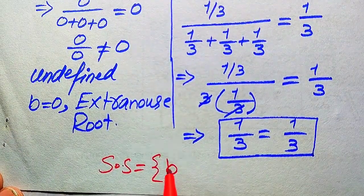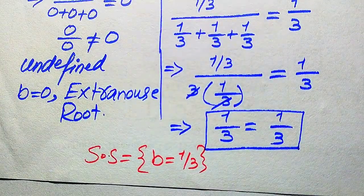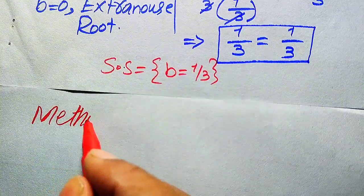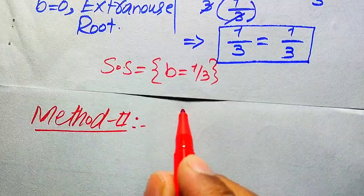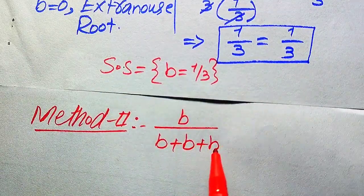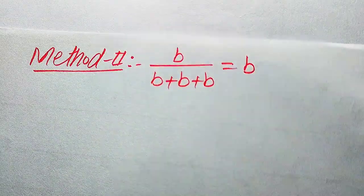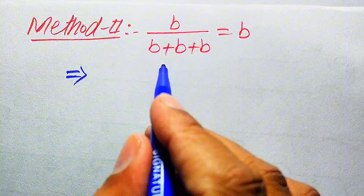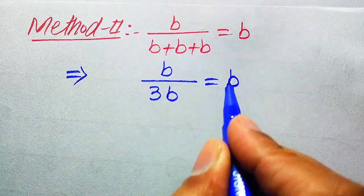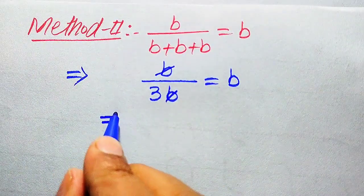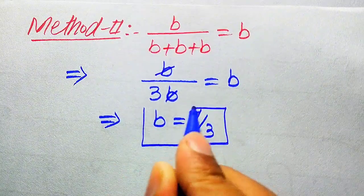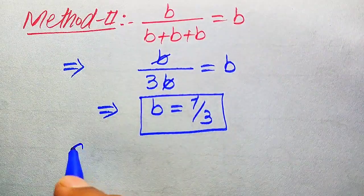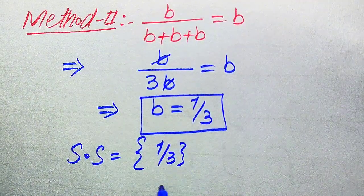Since both sides are equal, b equals 1 over 3 satisfies the given equation. So the solution set of this question is b equals 1 over 3. This is the final conclusion for the first method. Now we solve this problem using the second method. We copy the given equation: b divided by b plus b plus b equals b. In this method, a quicker way is to simplify the denominator directly — b added three times becomes 3b — so b divided by 3b equals b, the b's cancel, and we get b equals 1 over 3.